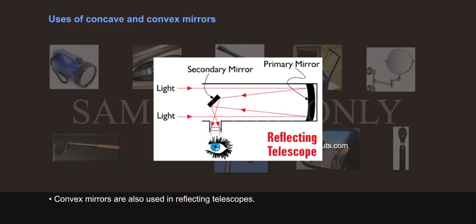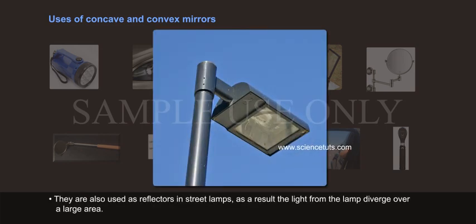Convex mirrors are also used in reflecting telescopes and as reflectors in street lamps. As a result, the light from the lamps diverges over a large area.